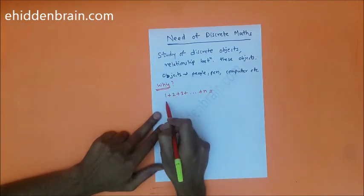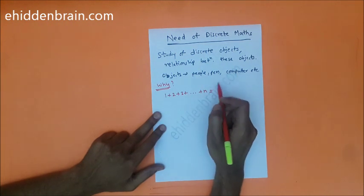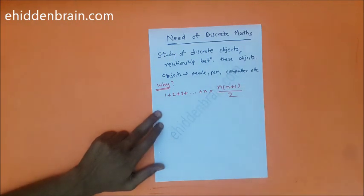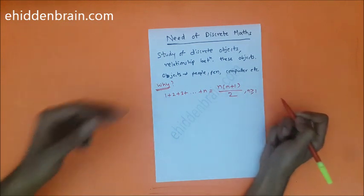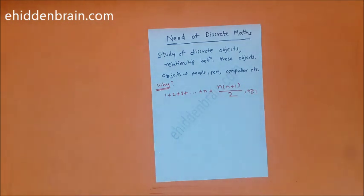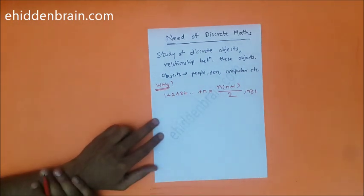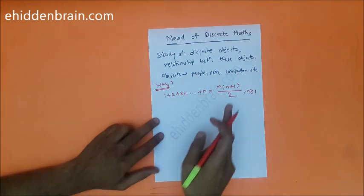The summation of the first n natural numbers is n into n plus 1 by 2. Everyone knows this very famous formula. Now why does discrete math come in the picture here? Let's see.